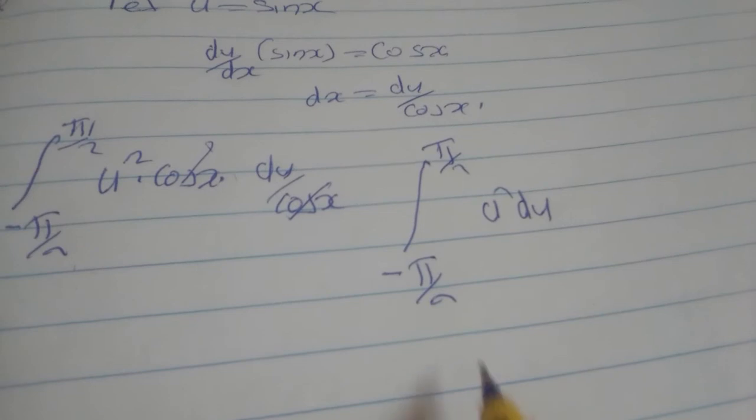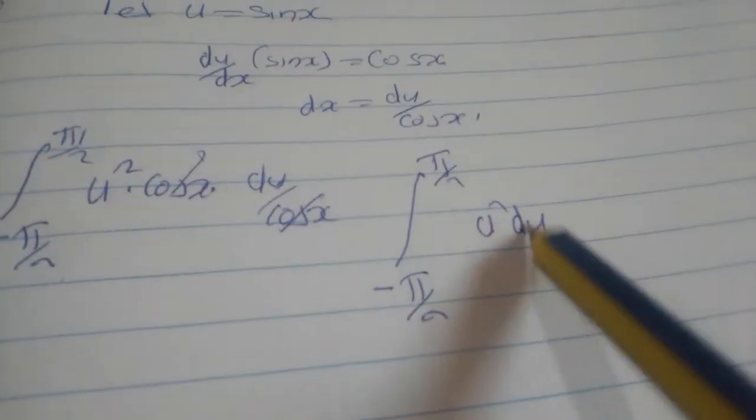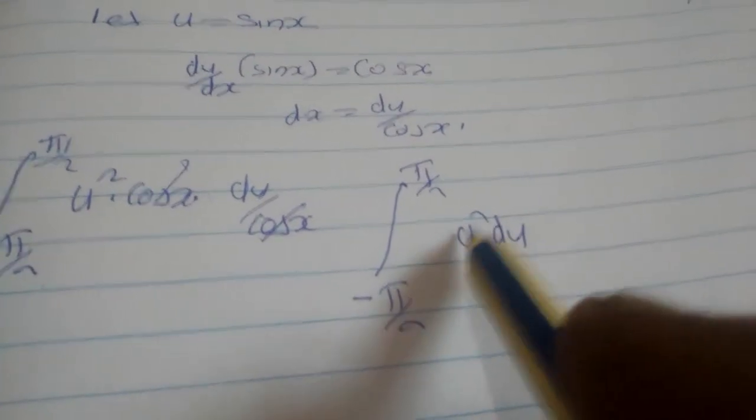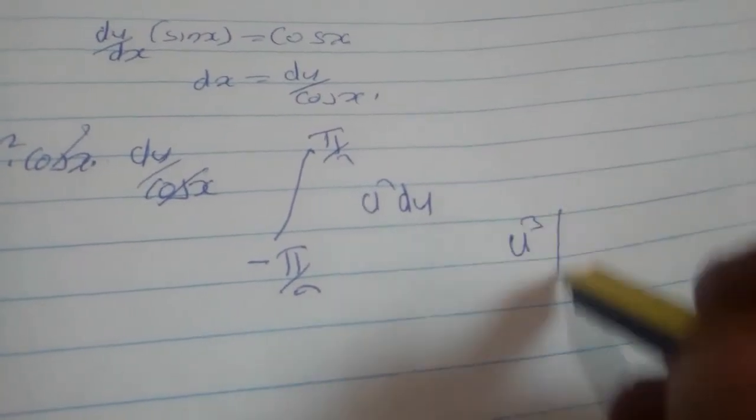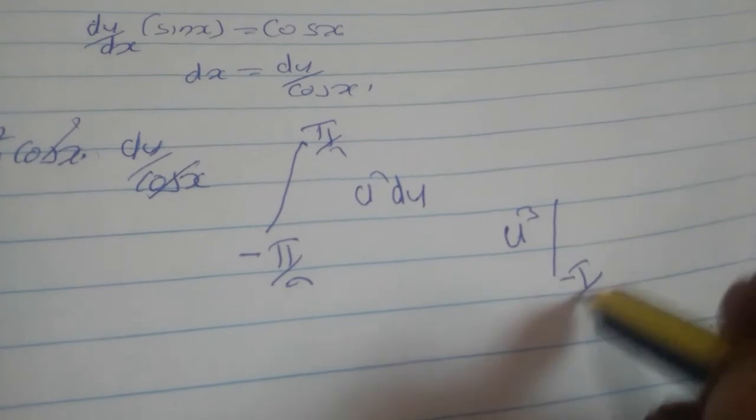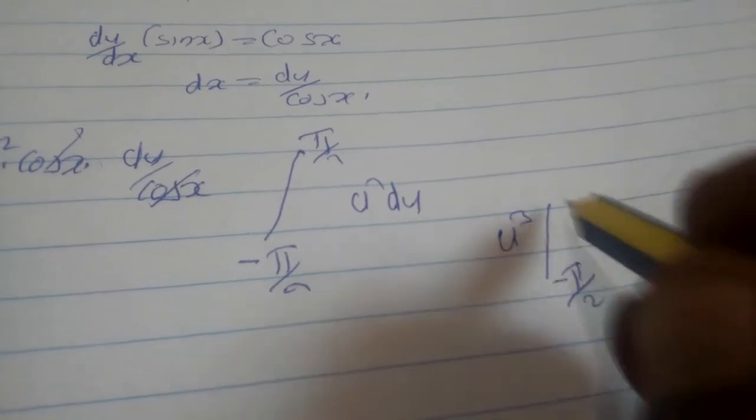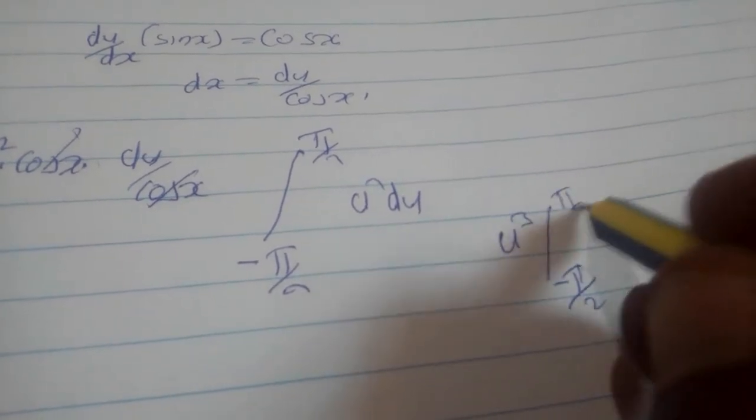After this one you can see that you can find the integral of u². So u² you are going to get u³ over 3 from negative π over 2 to π over 2.